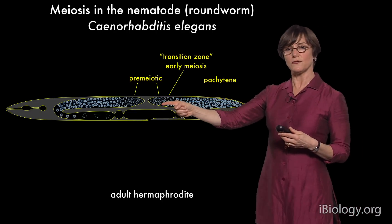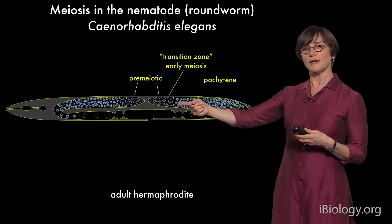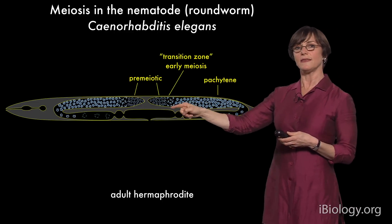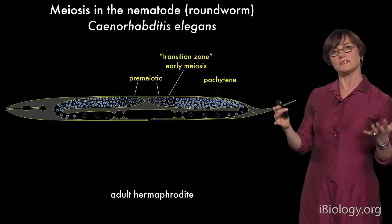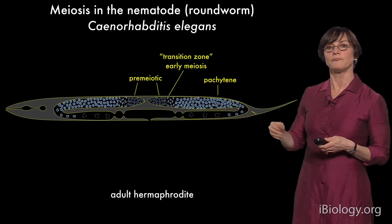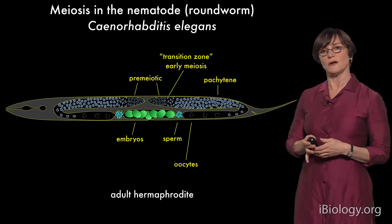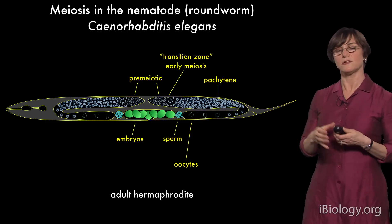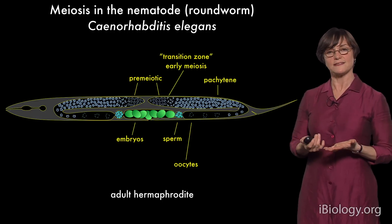In the distal region of the gonad there are proliferative zones where nuclei divide mitotically. As nuclei get pushed toward the uterus, they enter meiosis, going through the transition zone where pairing and synapsis occur. They initiate meiotic recombination, which is complete by mid-pachytene. Eventually chromosomes condense and segregate — first giving rise to a pool of sperm, then oocytes, which pass through the spermatheca, get fertilized, and the resulting cells start dividing internally as embryos.